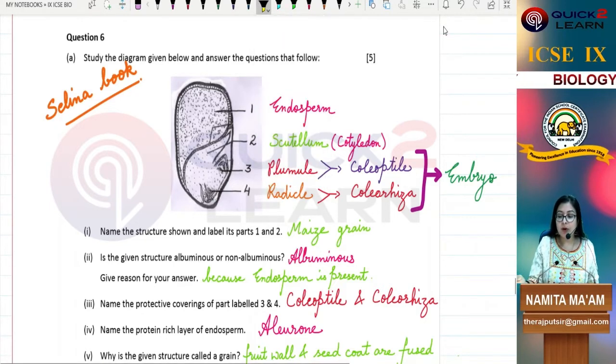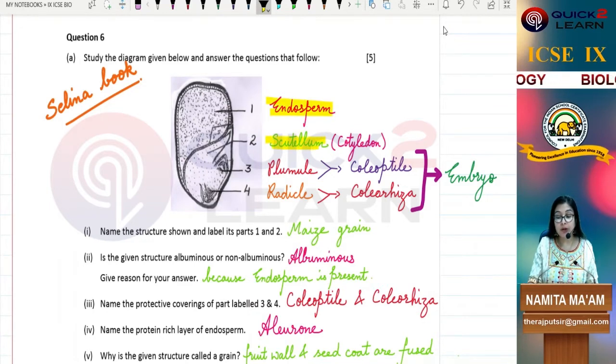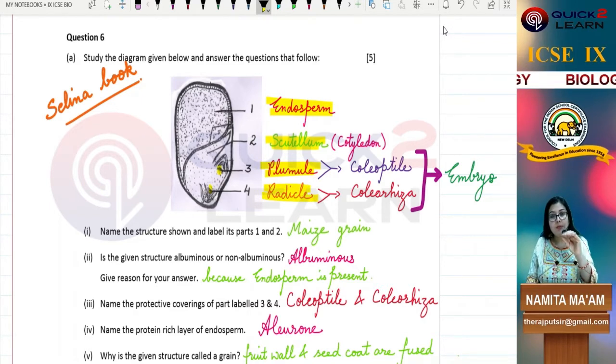I will tell you the labeling. First I will tell you: number one is endosperm, number two is scutellum or we can call it cotyledon, number three is plumule and this is radicle. The plumule gives rise to the shoot part of the plant, which is the aerial part of the plant.